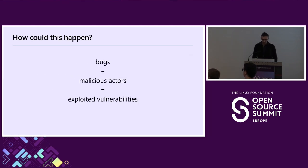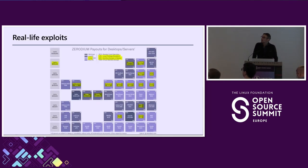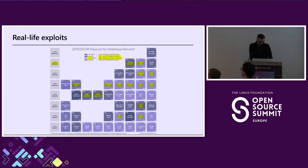How could this happen? Well, bugs. There are bugs everywhere — we try to mitigate them, but they exist, that's a fact. There are also malicious actors, attackers — that's also a fact — which means there are exploited vulnerabilities, and that's real life. There are online marketplaces where you can buy exploits, and they give you some idea about the cost of such an exploit, which is definitely useful for some actors.